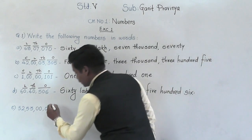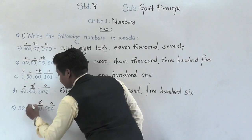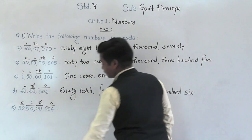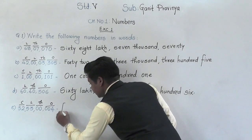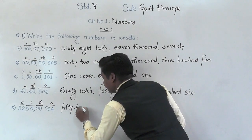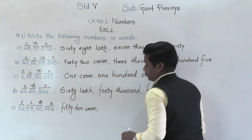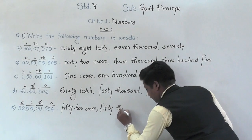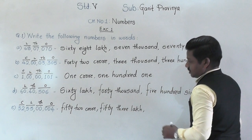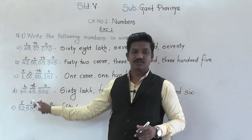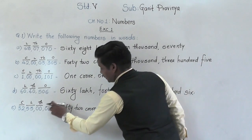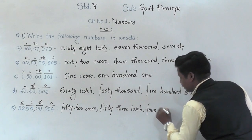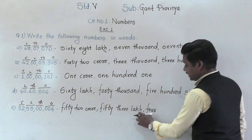Let's move to the next question. There are four groups: ones, thousands, lakh, and crore. In the crore group, 52 crore. In the lakh group, 53 lakh. In the thousands group there is 00 — so we don't need to write that; directly come to the ones group, where 004 means only 4. So the number name is 52 crore 53 lakh and 4.